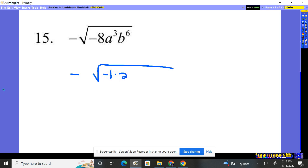Negative 8 is a negative 1 times 2 times 2 times 2. A, A, A, B, B, B, B, B, B. A lot of things there, but no big deal.